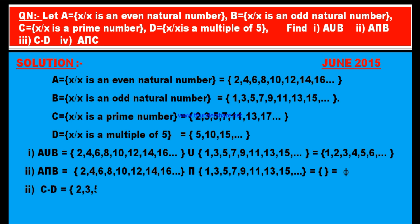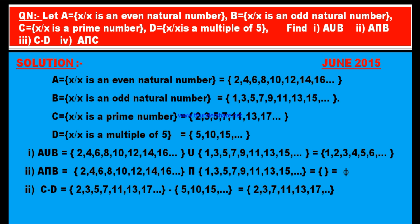Third part: C minus D. C = {2, 3, 5, 7, 11, 13, 17, ...} minus D = {5, 10, 15, ...}. Subtraction means strike out the common elements from both sets and list out only the elements left in the first set. So 2, 3, 7, 11, 13, and so on are not in the second set — therefore C minus D = {2, 3, 7, 11, 13, ...}.